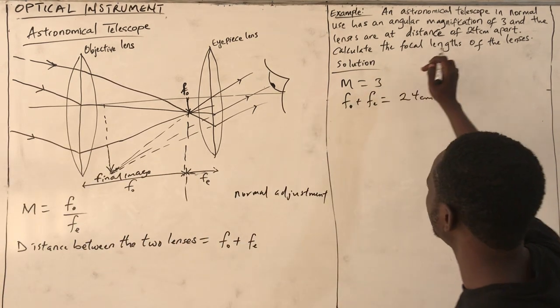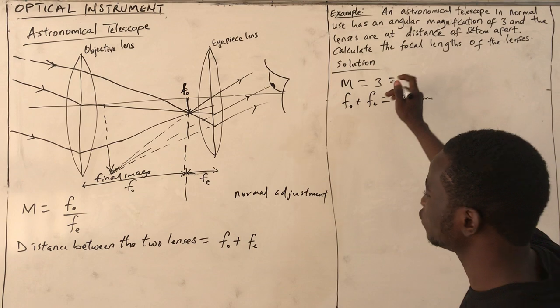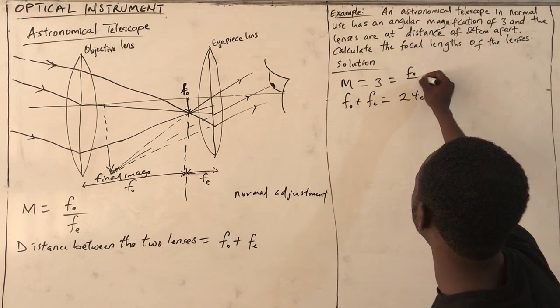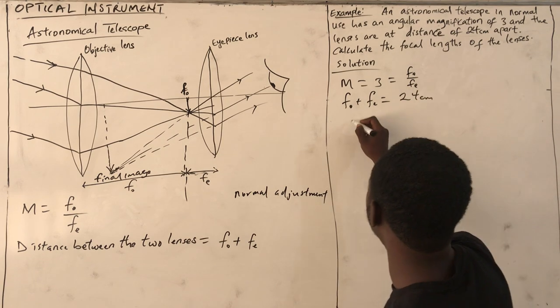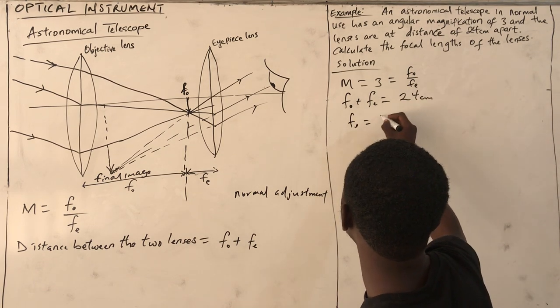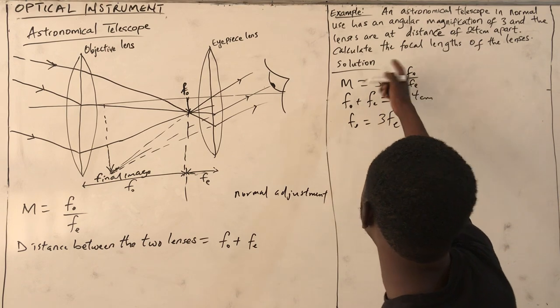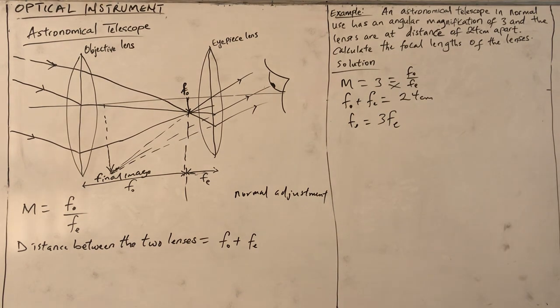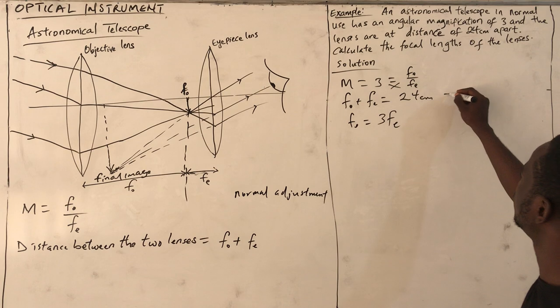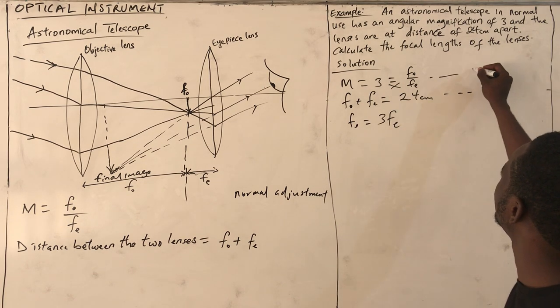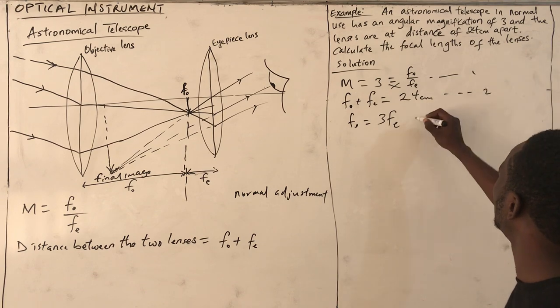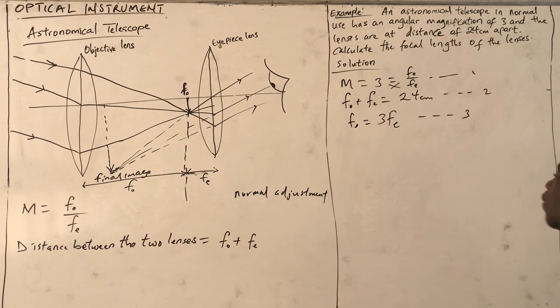The magnification is 3. The magnification is given by F₀ over Fₑ. From this equation, we have F₀ = 3Fₑ. If we substitute equation 3 into equation 2, we get 3Fₑ + Fₑ = 24.